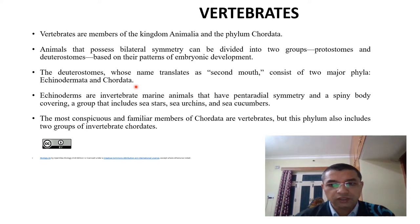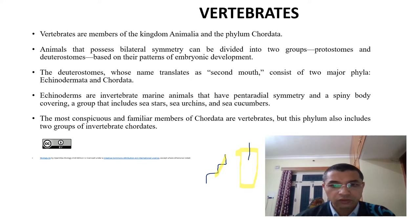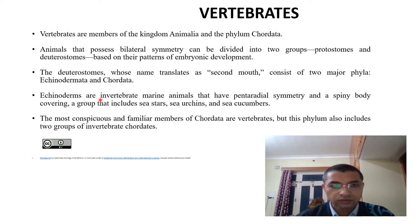If we talk about bilateral symmetry — bilateral symmetry means if you cut along a plane, the body is divided into two similar halves. That is the example of bilateral symmetry. Bilateral symmetry is also a characteristic feature of chordates.